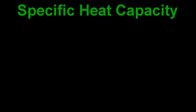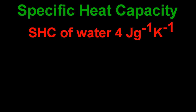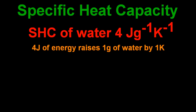Let's start off with an example. The specific heat capacity of water is about four joules per gram per kelvin — that's one sig fig. So what does that mean? Well, just read the units and that will help you. It means that four joules of energy raises one gram of water by one kelvin. So even though that unit looks evil, it's actually quite doable.